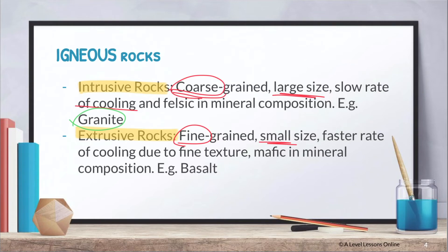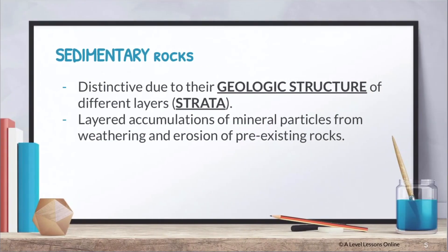Next, we move on to sedimentary rocks. Sedimentary rocks are special because of their strata — their layered geologic structure. Strata is basically a piling up of different layers that accumulate over time, building on top of one another to form a sedimentary rock. They are essentially layer accumulations of mineral particles from the weathering and erosion of pre-existing rocks, such as igneous rocks. As these particles pile up and apply pressure on one another, they compact and form a sedimentary rock.